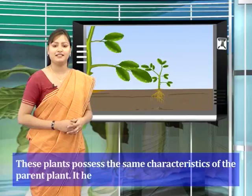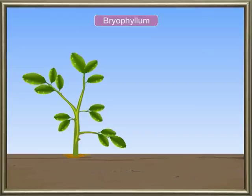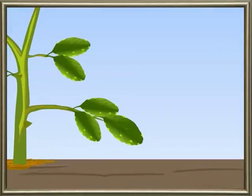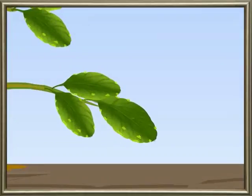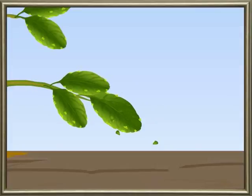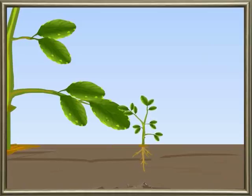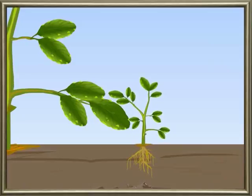The Bryophyllum leaf is broad and has notches at its margins. Buds arise from the notches, and these buds drop off from the leaf and grow into new plants. Each new plant has a bunch of roots and small leaves.